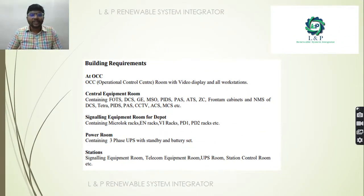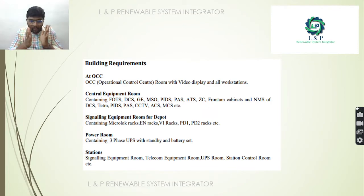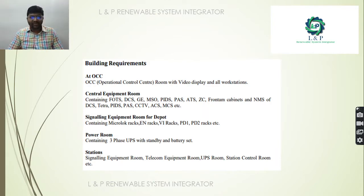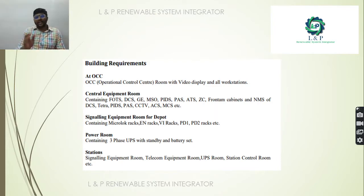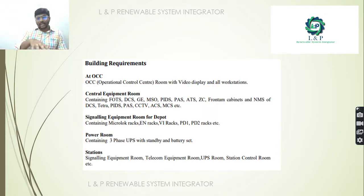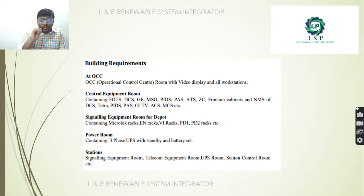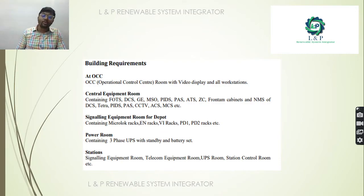For building requirements, the metro station should have an OCC (operation control center). The central equipment room needs to house PAS, CCTV, BAS, ACS, and DZS systems. Rooms must be allocated for signal equipment, depot requirements, and a power room with 3-phase supply plus UPS and battery backup. Each station also needs a signalling equipment room, telecom equipment room, UPS room, and station control room.